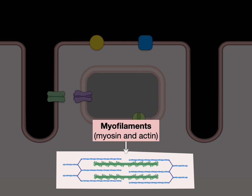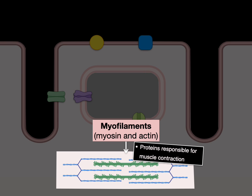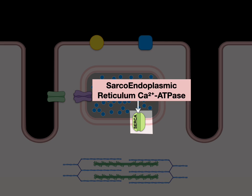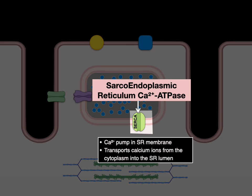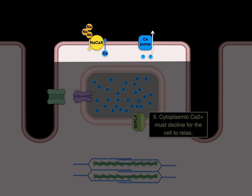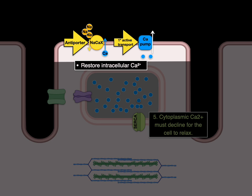The myofilaments — myosin, actin, troponin, and tropomyosin complex — are the proteins responsible for muscle contraction. The sarcoendoplasmic reticulum calcium ATPase, or SERCA, is a calcium pump in the SR membrane that transports calcium ions from the cytoplasm back into the SR lumen. Finally, there is also an antiporter that helps move calcium out of the cell, and a calcium pump using primary active transport, both of which restore intracellular calcium.